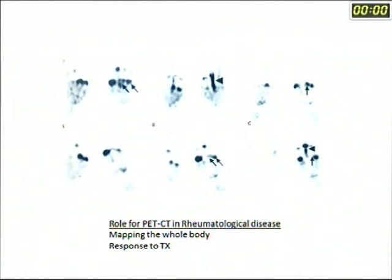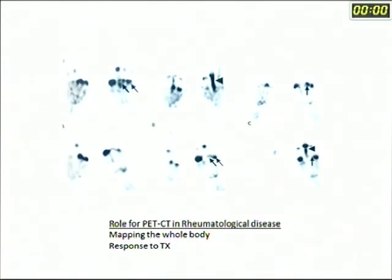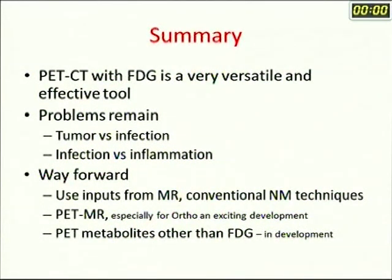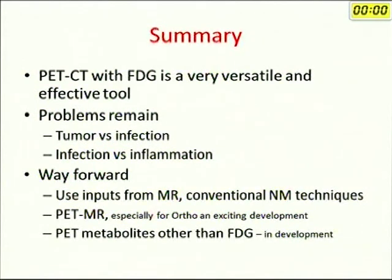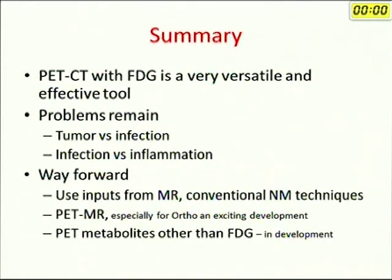Extending PET to rheumatological diseases: it is a very good way in conditions like rheumatoid arthritis to map the whole body to know where all disease is present. In summary, PET is a versatile and effective tool applicable in several situations. Problems remain — tumor versus infection is an issue, and infection versus inflammation is an issue. The way forward is to use inputs from multiple imaging modalities; an integrated approach to the clinical problem is how you reach the correct diagnosis.